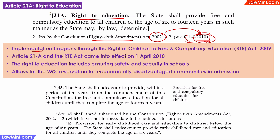The actual implementation of the right to education happened through the RTE Act of 2009. Both the RTE Act and Article 21a, on which the RTE Act is based, came into effect only from the 1st of April of 2010.